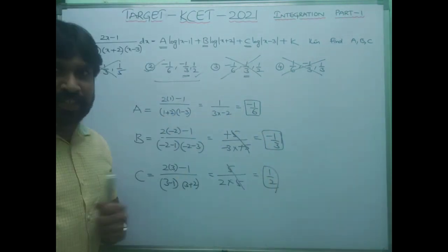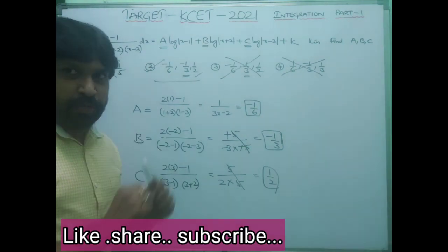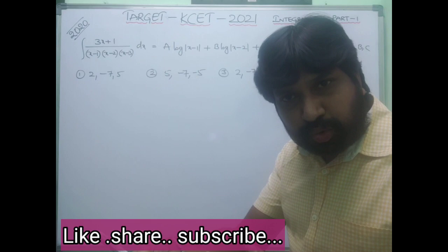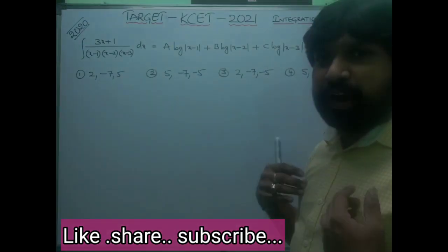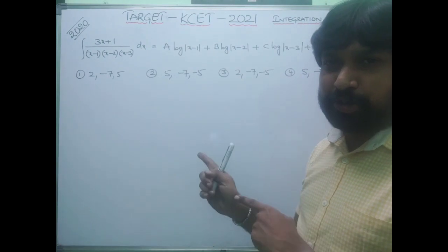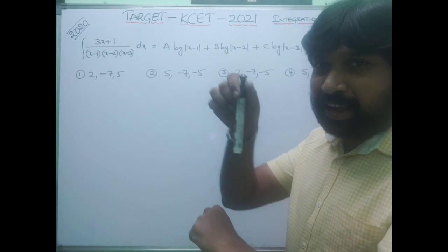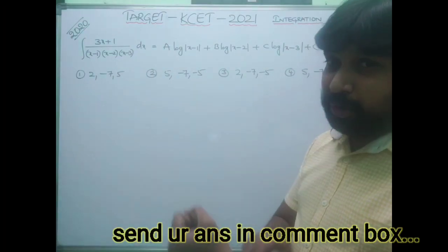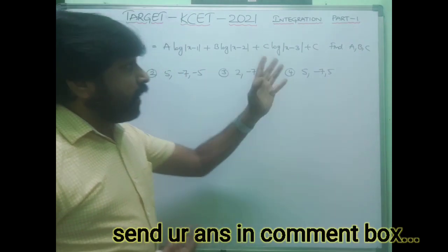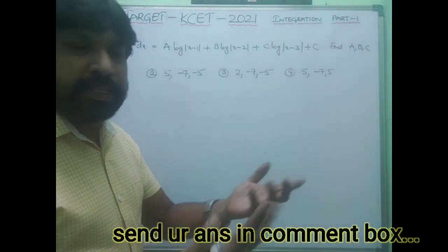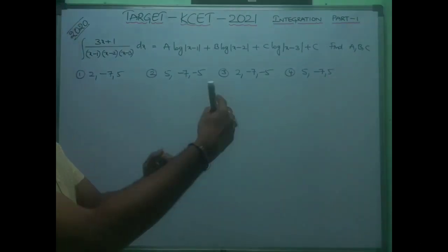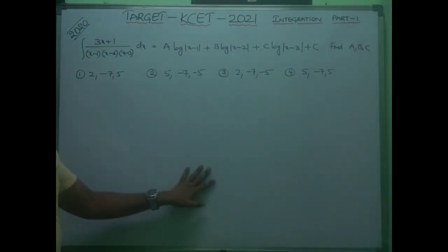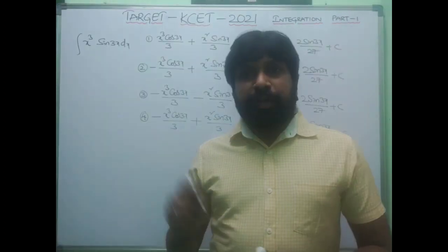If you like the shortcut, give a like. Moving to the next question — this is a 2020 question similar to the 2019 question just solved. I want you to apply the same logic, check your time, and comment how many seconds you took and what the correct answer is. Also note: instead of asking A, B, C separately, they may ask A + B + C or A − B − C, so be ready to find all three values and combine them accordingly.